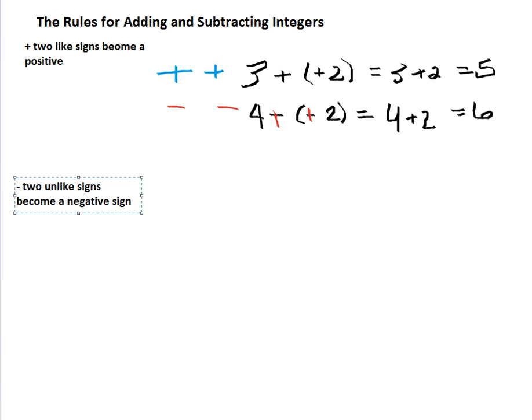This one just says when we have a positive and a negative, we always become a negative sign. So, if we have three plus negative two, we're actually doing three minus two, which equals one.